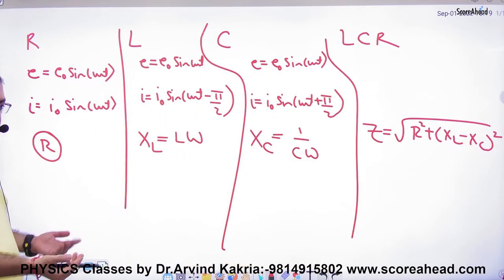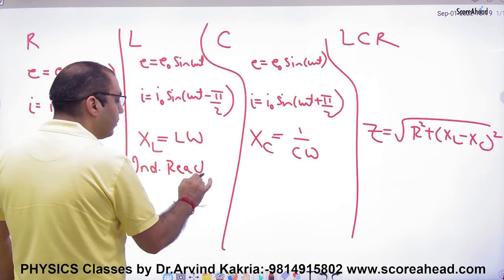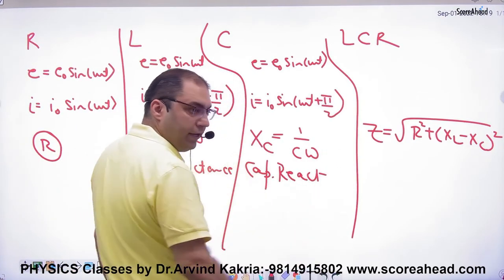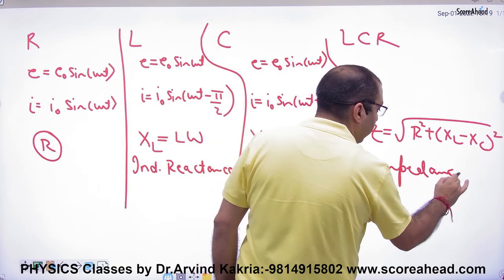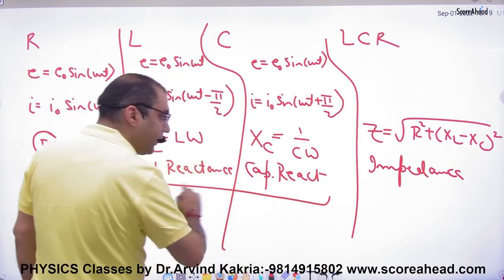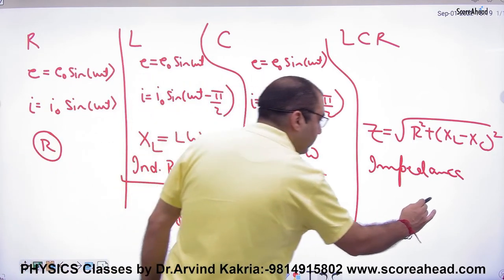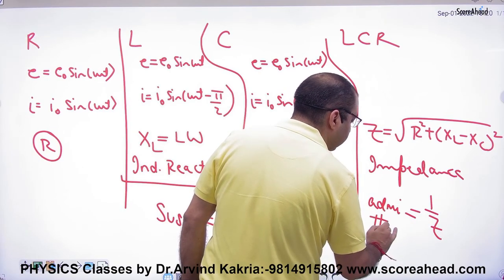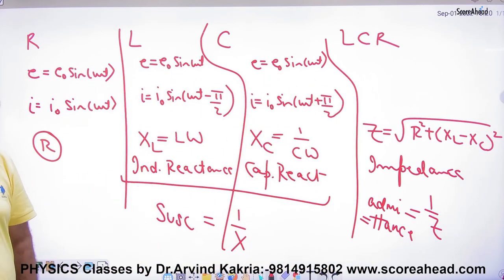To summarize the names: R is called resistance; Lω is inductive reactance; 1/Cω is capacitive reactance; Z is impedance. The reciprocal of reactance is known as susceptance, and the reciprocal of impedance — that is, 1/Z — is known as admittance.